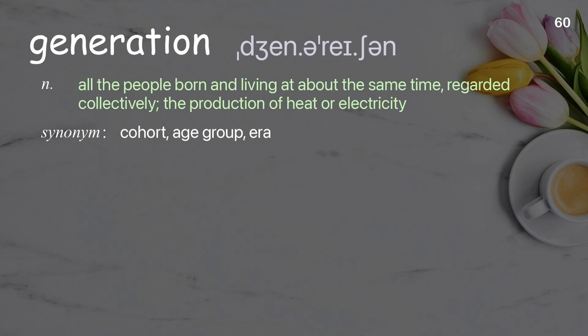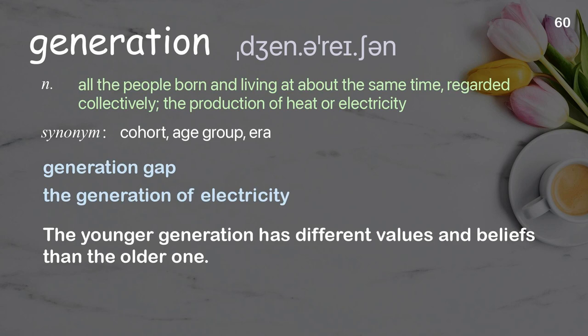Generation: all the people born and living at about the same time, regarded collectively; the production of heat or electricity. Examples: generation gap; the generation of electricity. The younger generation has different values and beliefs than the older one.